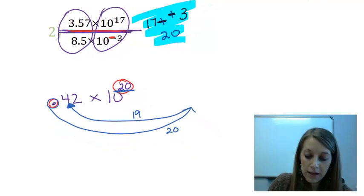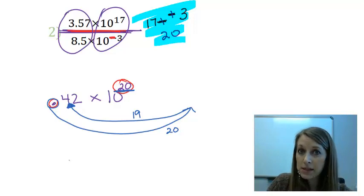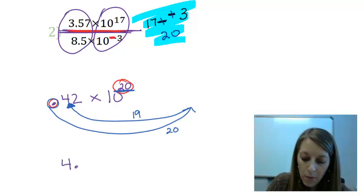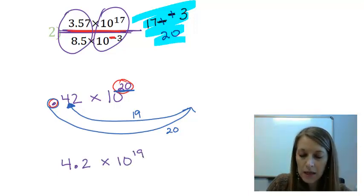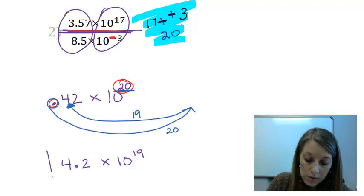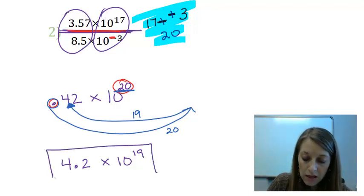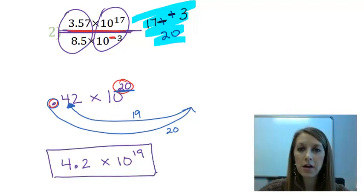So my final answer in this problem, because it's in scientific notation format, is 4.2 times 10 to the 19. And you are always more than welcome to check these problems using your calculator.